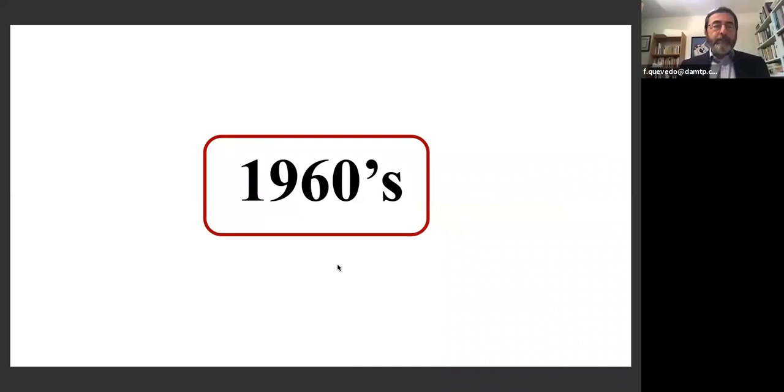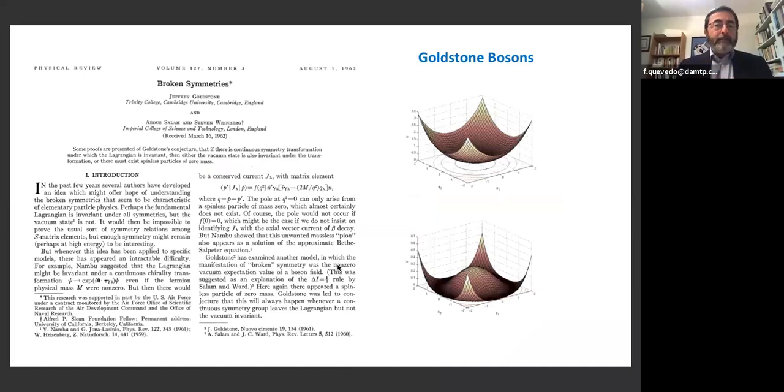In the 1960s, it starts with a big paper. This is a classic already called Broken Symmetries, authored by Goldstone, Abdus Salam, and Steve Weinberg. I know the history of this paper. Salam invited Weinberg to spend one year at Imperial College in London. Before going there, Weinberg had met Goldstone at MIT and they discussed this result that Goldstone had.